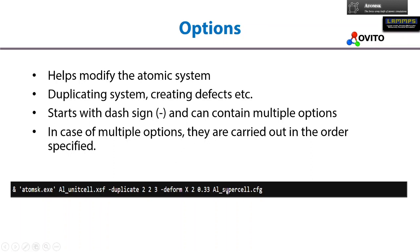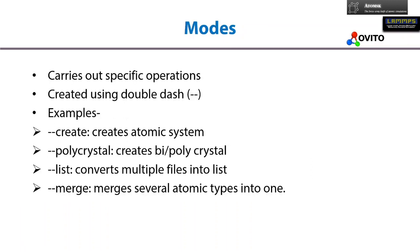We can carry out different modes. When we create modes, we have to use double dash before specifying the mode. There are different examples: we can create an atomic system, create a polycrystal or bicrystal system, convert multiple files into a list, and merge several atomic types into one. So there's a lot of theory; I would go into some demonstrations.